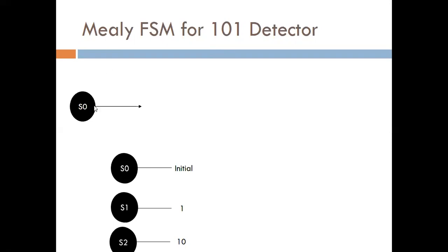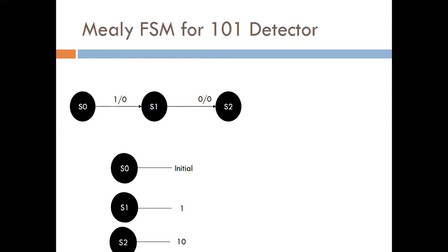From S0 to S1: when input is 1, it goes to S1 state. From S1 to S2: when input is 0, it goes to S2 state. Here no output is detected yet, so we write '1/0' — meaning input is 1 and output is 0. There are three states: S0, S1, and S2. If input is 1 it goes to S1, if input is 0 it goes to S2.